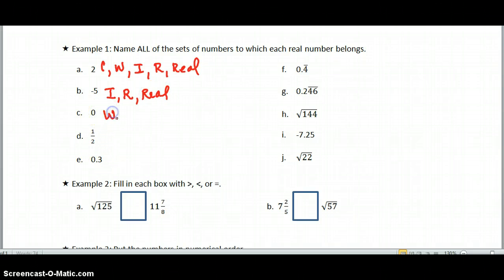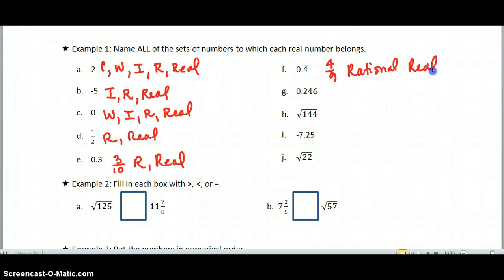Zero is that first whole number, so that makes it also an integer, a rational number, and real. One half is a rational number, and it is real. Zero point three, can I write that as a fraction? Sure I can. That's three over ten, so that makes it rational and real. 0.4 repeating, that would be four over nine, so that makes it rational and real. Zero point two four six, we've got the four six repeating. As long as there's a repeating pattern, it is still rational and real.